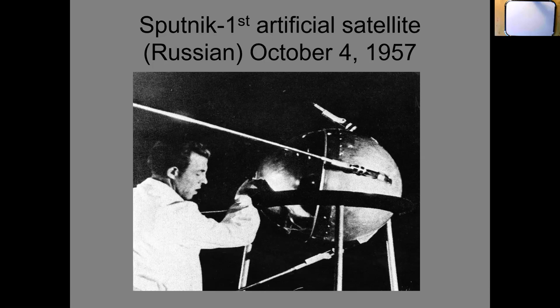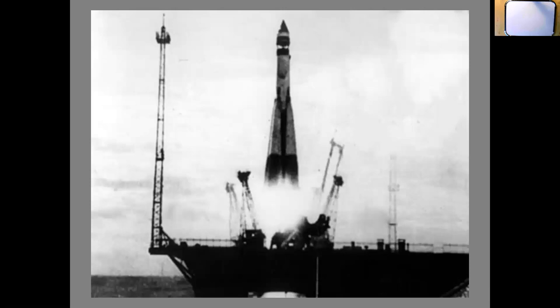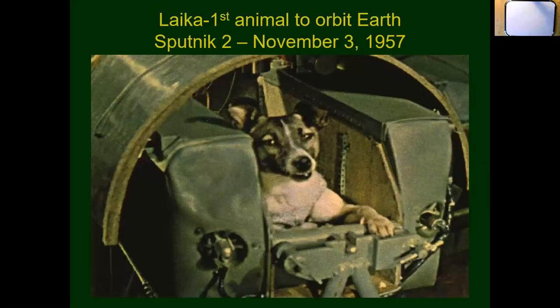We wanted to at least catch up. Here's the launch of Sputnik. By the way, Spud Webb, the basketball player - only 5'7", maybe really 5'5.5" - won a dunking contest in the 80s. I heard his grandmother named him Spud after Sputnik, and I don't know if that's true, but it's an interesting story. Well, the Russians beat us with a satellite. Maybe we could get an animal up there before the Russians - but they sent up Laika in Sputnik 2, the first animal to orbit the earth, also in 1957, about a month after the first Sputnik.